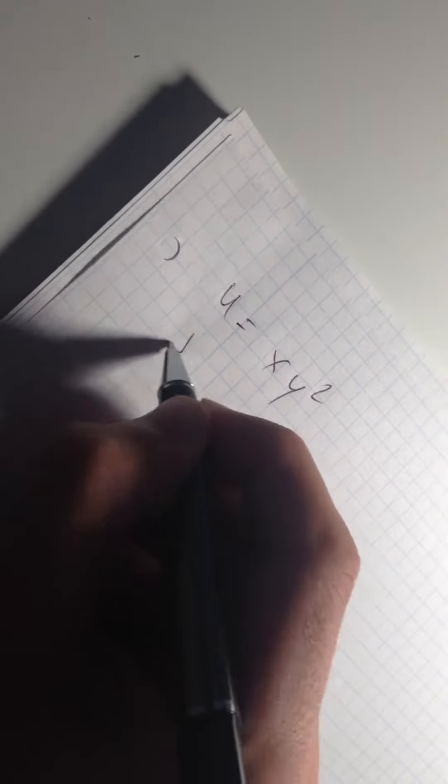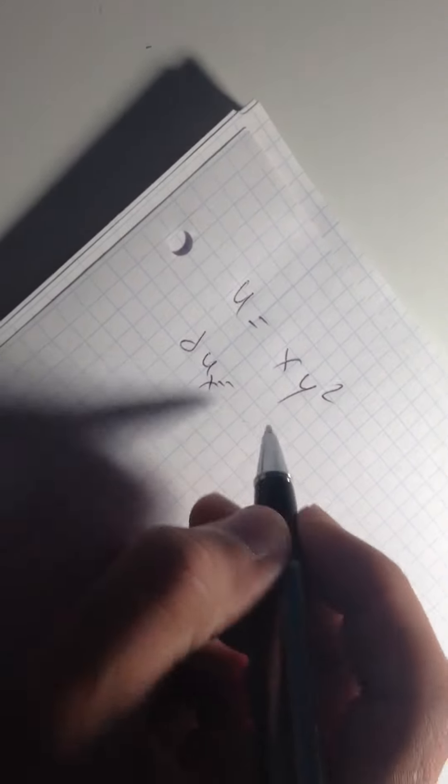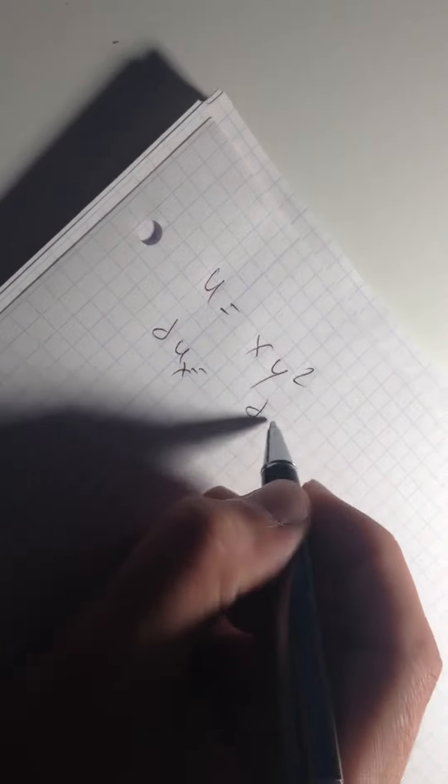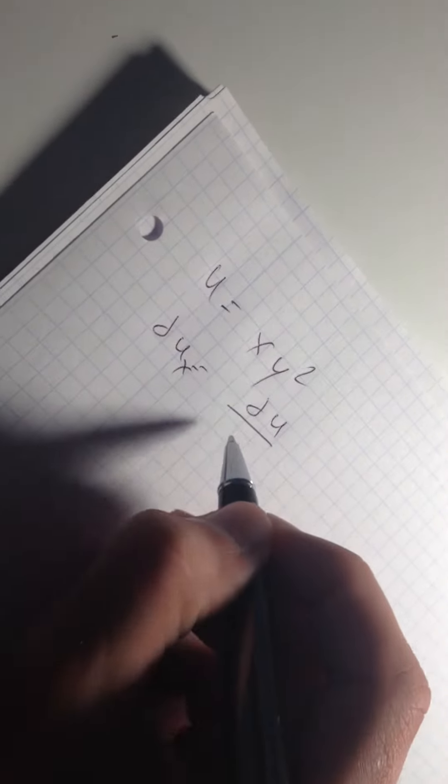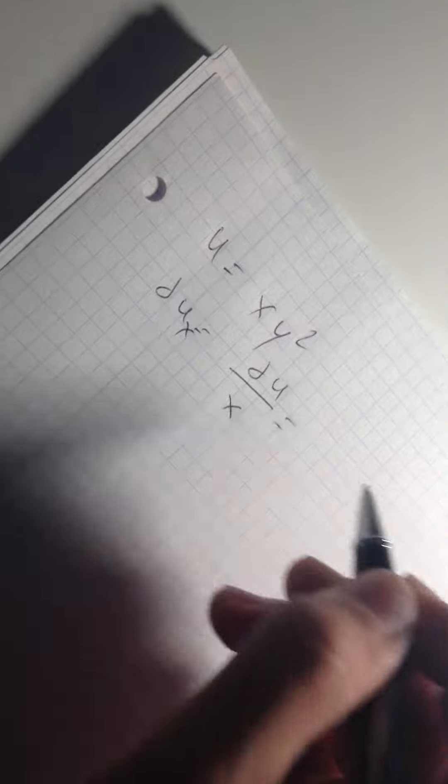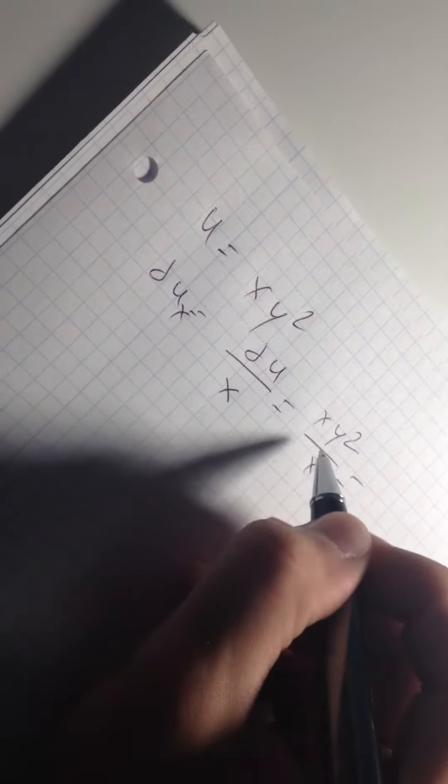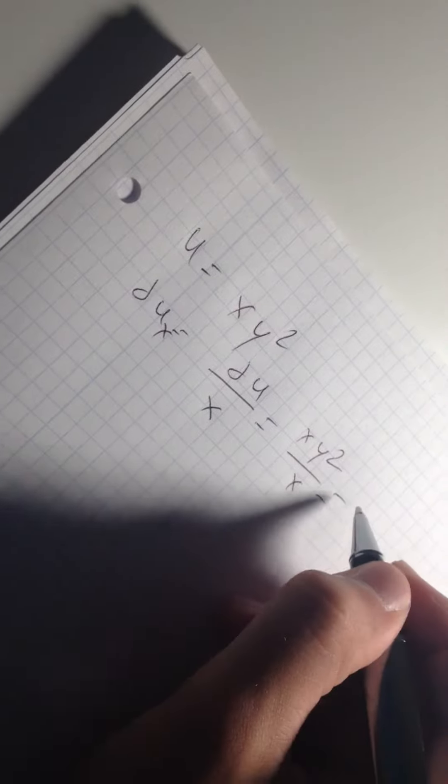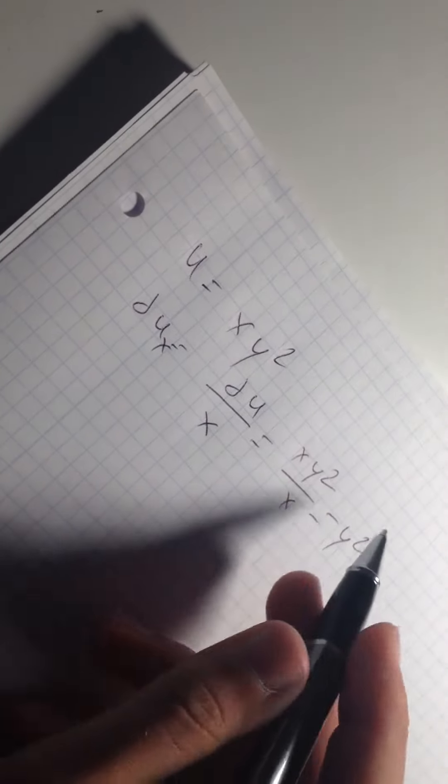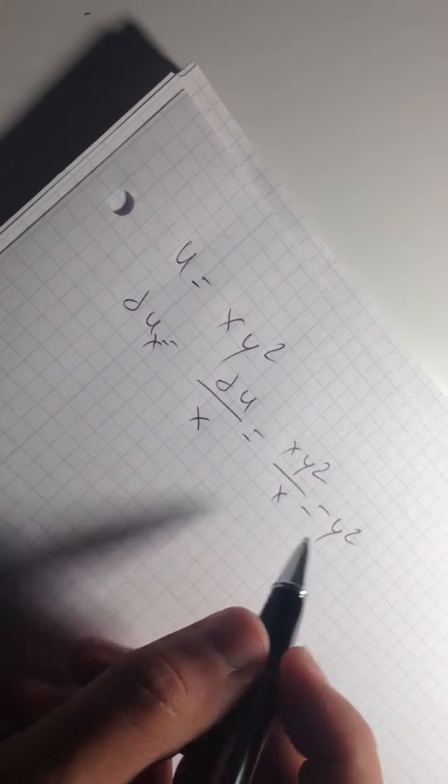You take ∂u/∂x and you take the derivative of the entire function. You differentiate x and it's going to be... the derivative of x is going to be 1, and that's why we have at the end y².